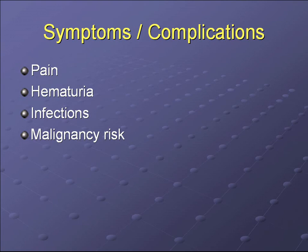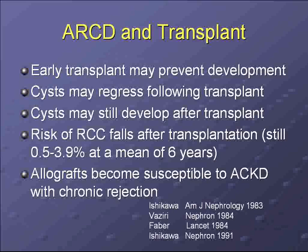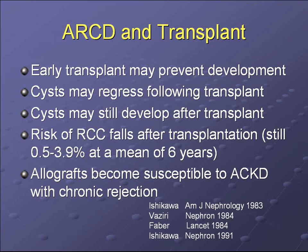Complications of acquired renal cystic disease include pain, hematuria, infections, and most notably an increased risk of malignancy. Regarding transplant: early transplant may prevent cyst development; cysts may regress following transplant, though some may still develop. The risk of RCC falls after transplant but remains higher than the general population at 0.5 to 3.9% at a mean of six years. In chronic rejection, allografts can again become susceptible to cyst formation.